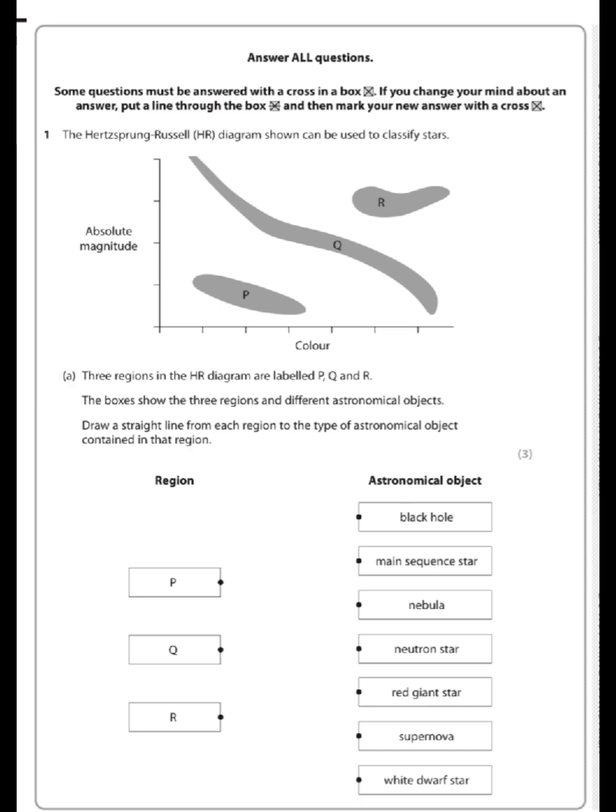If we look at Q, we can see that Q spans a great big range here. We have stars that are very hot and very bright, down to stars that are not so hot and not so bright. This huge great big range is our main sequence star, so Q is a main sequence star.